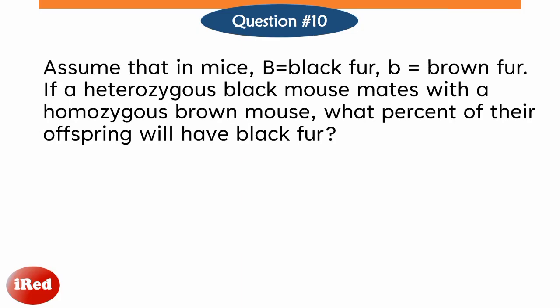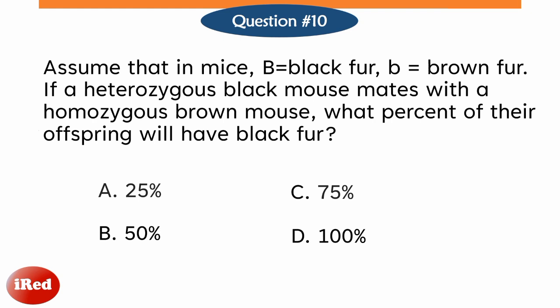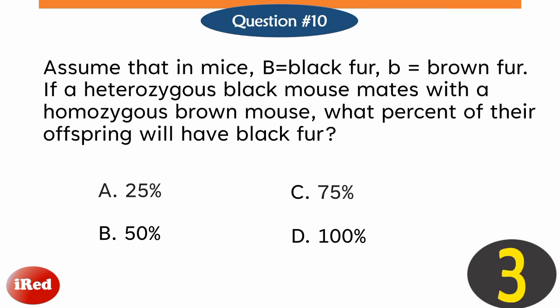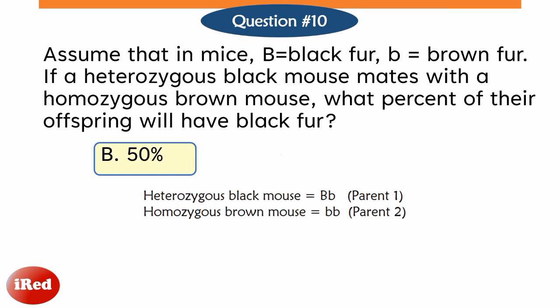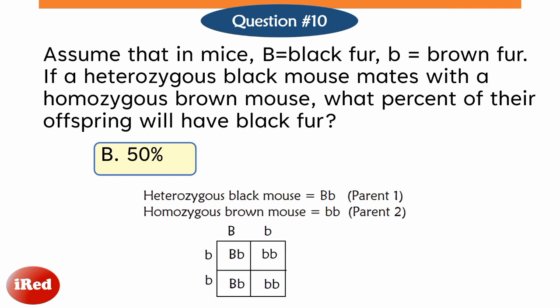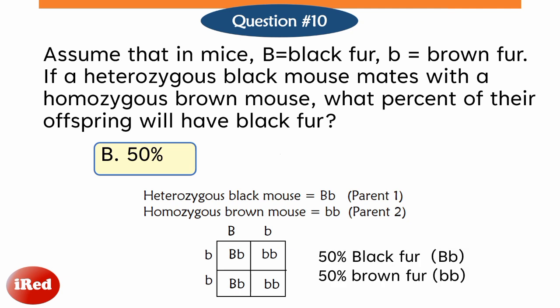Assume that in mice, capital B is for black fur and lowercase b is for brown fur. If a heterozygous black mouse mates with a homozygous brown mouse, what percent of their offspring will have black fur? A, 25%; B, 50%; C, 75%; or D, 100%? The correct answer is letter B, 50%. Parent 1 is heterozygous black, written as capital B and lowercase b. Parent 2 is homozygous brown, written as lowercase b, since brown is the recessive allele. Using a Punnett square, the percentage that the offspring will be black is 50%.